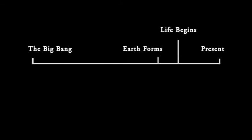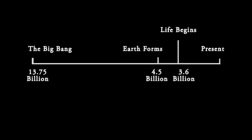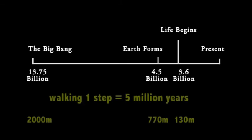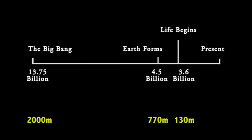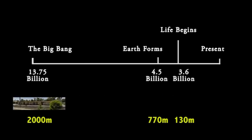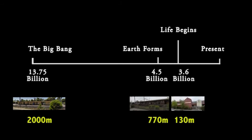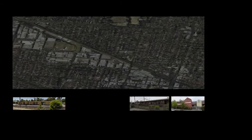Here is a timeline for the age of the universe stretching 13.75 billion years. If we use a walking scale we can walk this distance in 2,000 metres and use the local landmarks of Huntingdale Station, Oakley Station and SHGC. Here they are on a map.